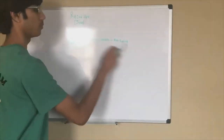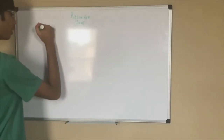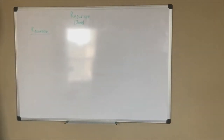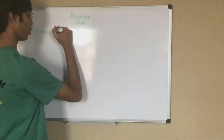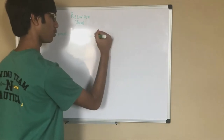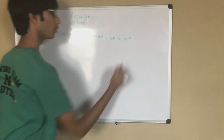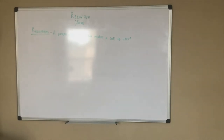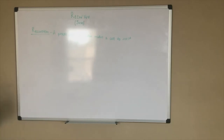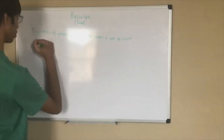Let's start with our main objective for today: recursion. What is it? Recursion is a process when a method makes a call to itself. That is simply what recursion is. A method that involves recursion is known as a recursive method. A recursive method is simply a method that involves recursion.